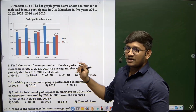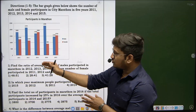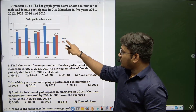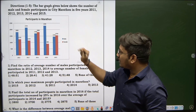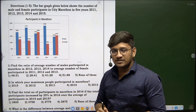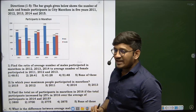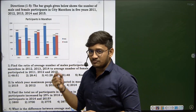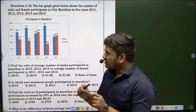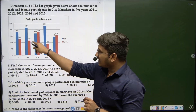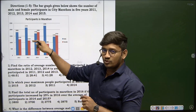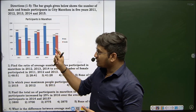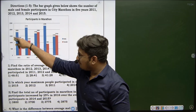This bar graph indicates — if you observe for 2011, we have 2 different colors of lines. Blue color indicates male participants in marathon and red color indicates female participants in marathon. They have given the count as well. Sometimes if they give exact count, we can take that count. Sometimes they may not mention these values, so you need to refer the y-axis line.